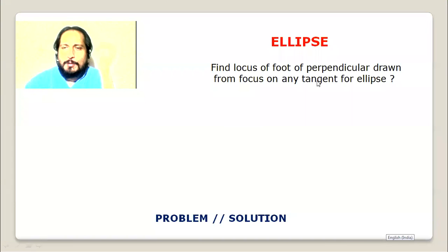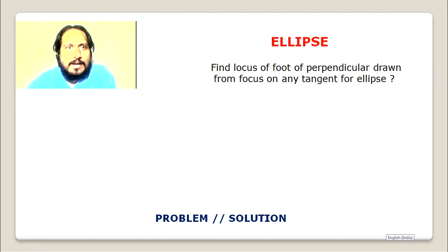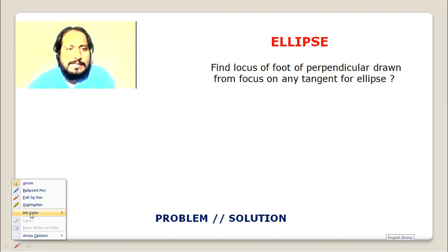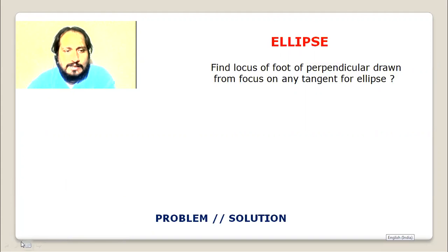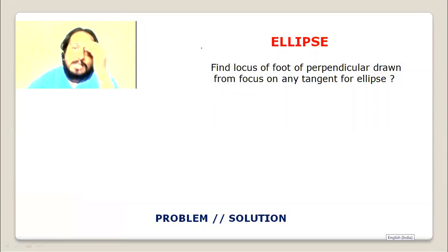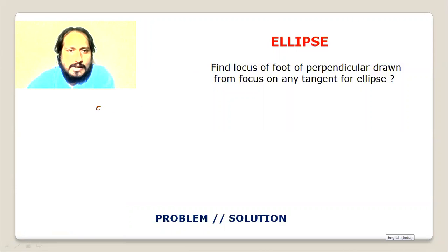Find the locus of the foot of the perpendicular drawn from the focus on any tangent for an ellipse. This is an interesting ellipse property. The locus of the foot of perpendicular drawn from the focus on any tangent is related to the auxiliary circle. Consider an ellipse with a greater than b: x squared upon a squared plus y squared upon b squared equals 1.